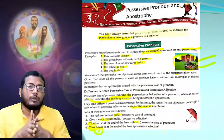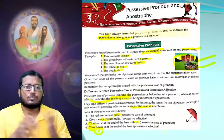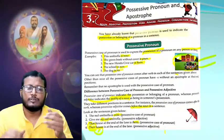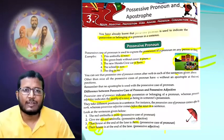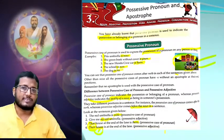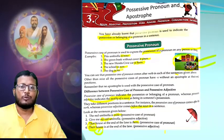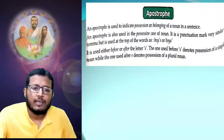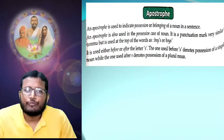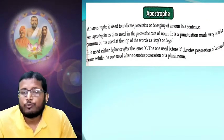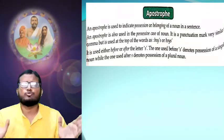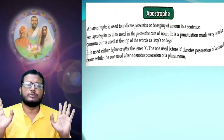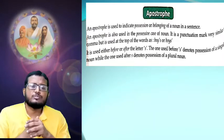Hope so this is completed. Any doubt? Your brain is working very nicely. Let's go to the second page. Now we are going to know about the apostrophe. Take it simply: one comma should be there overhead. An apostrophe is used to indicate possession or belonging of a noun in a sentence, and it is also used in the possessive case of noun.